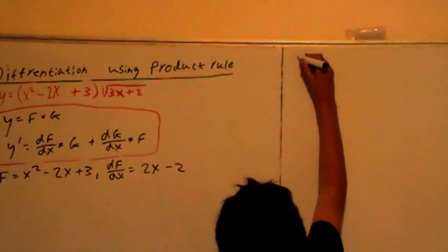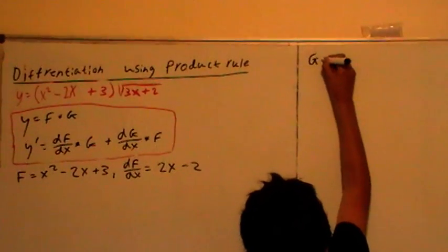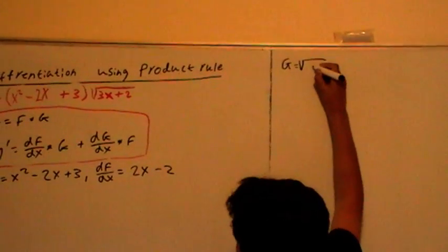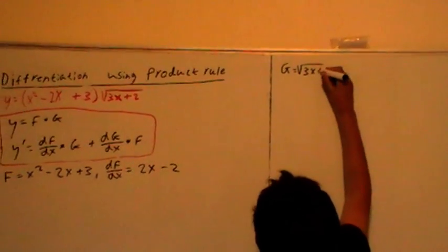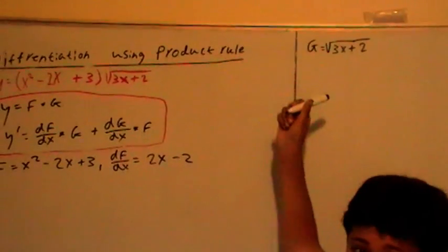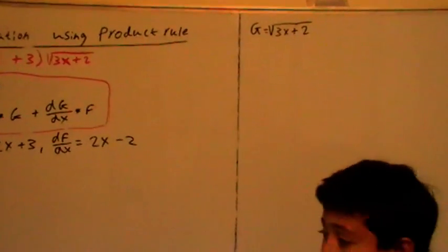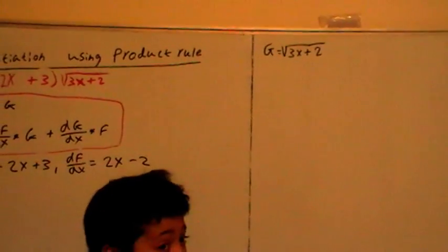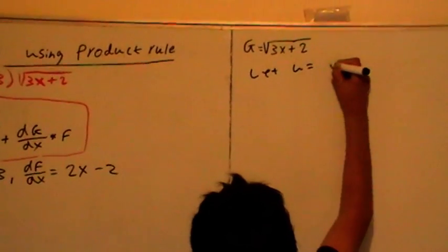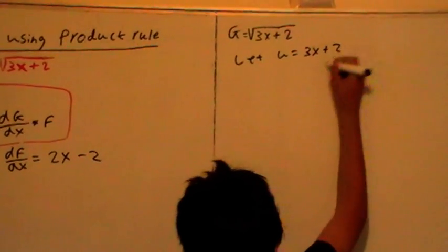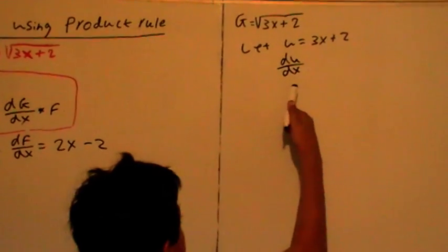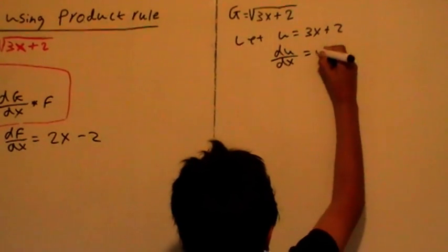Now, g equals root 3x plus 2. We can't differentiate that straight, so I have to make a substitution using the chain rule. So, let u equals 3x plus 2. du over dx, that's the first derivative of u, which is equal to 3.